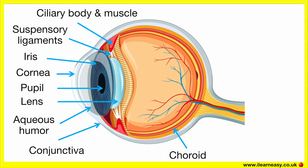Choroid. This is the middle layer between the retina and sclera. The choroid contains lots of blood vessels and supplies oxygen and nutrients to the retina. It also absorbs excess light to prevent internal reflection, so your vision isn't blurry or hazy.